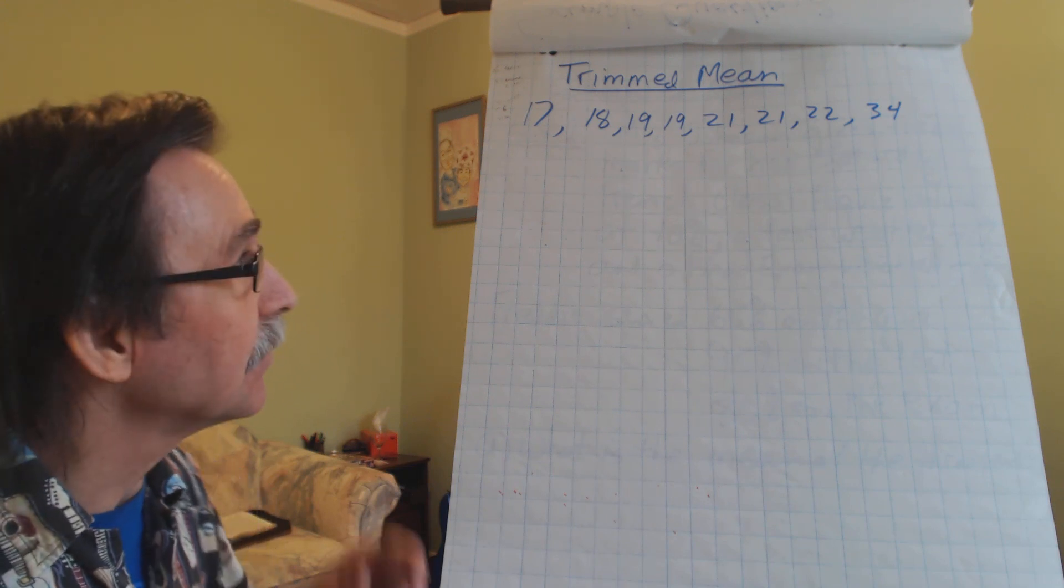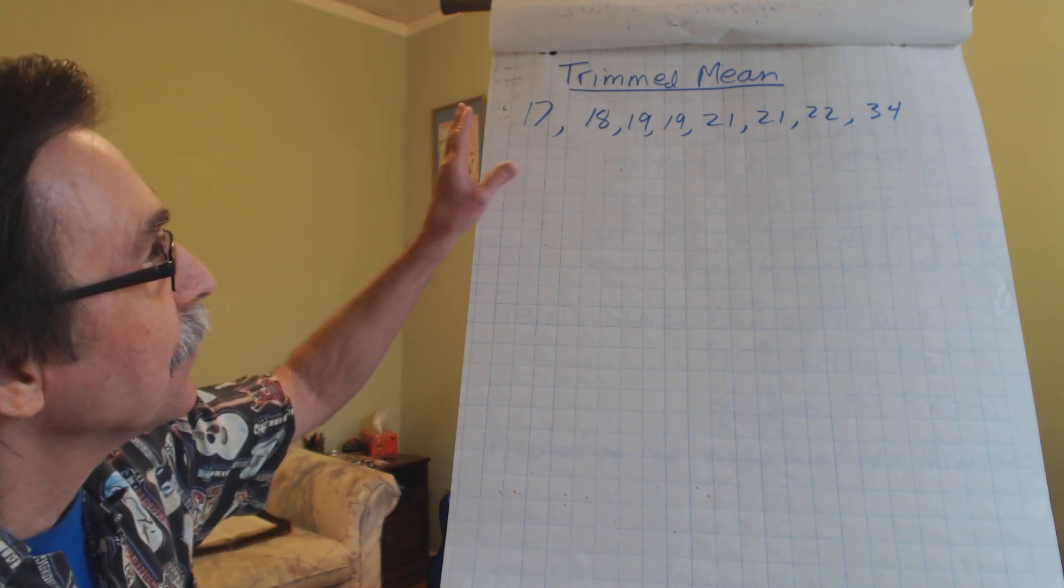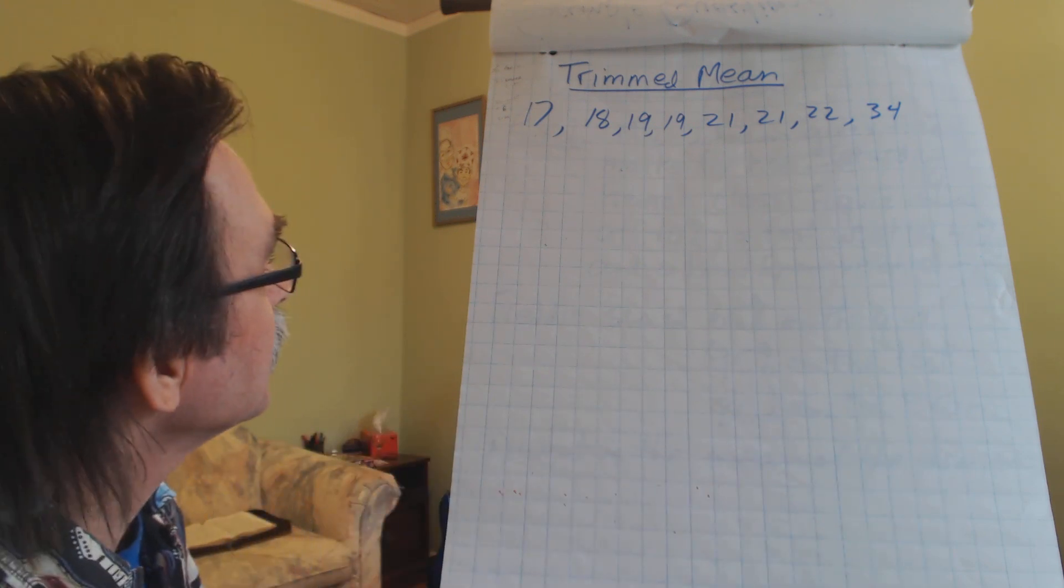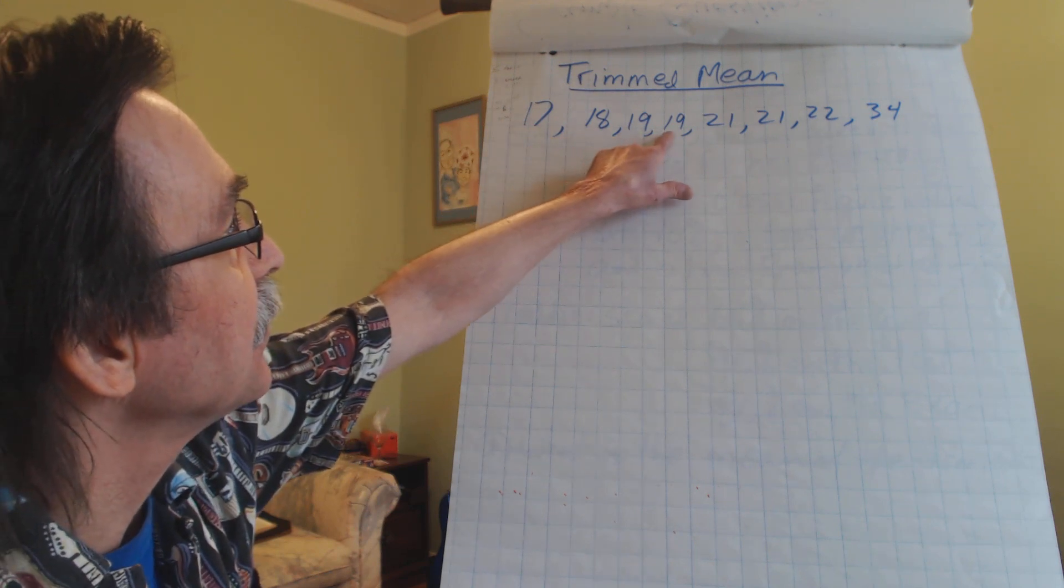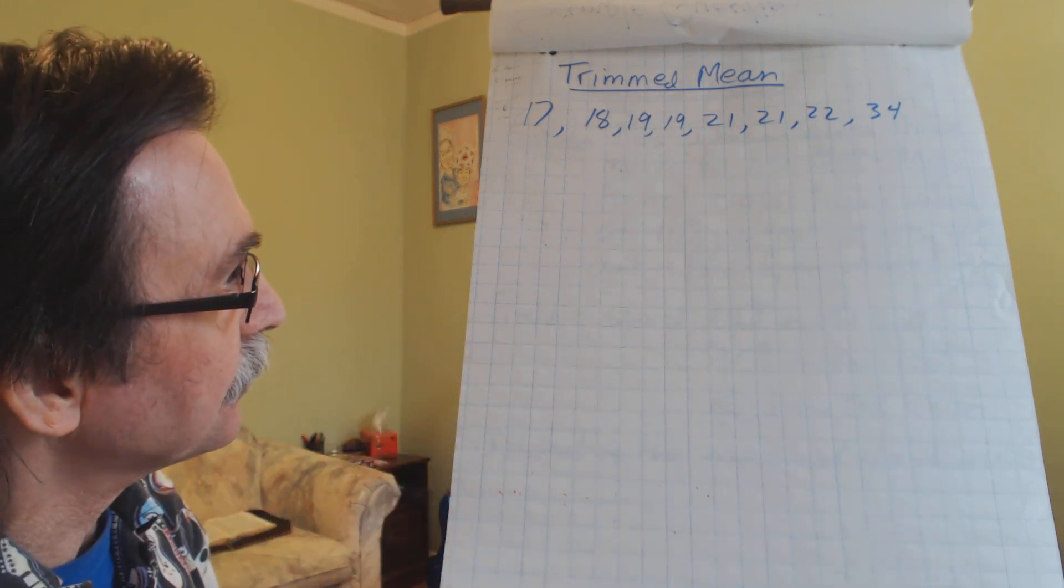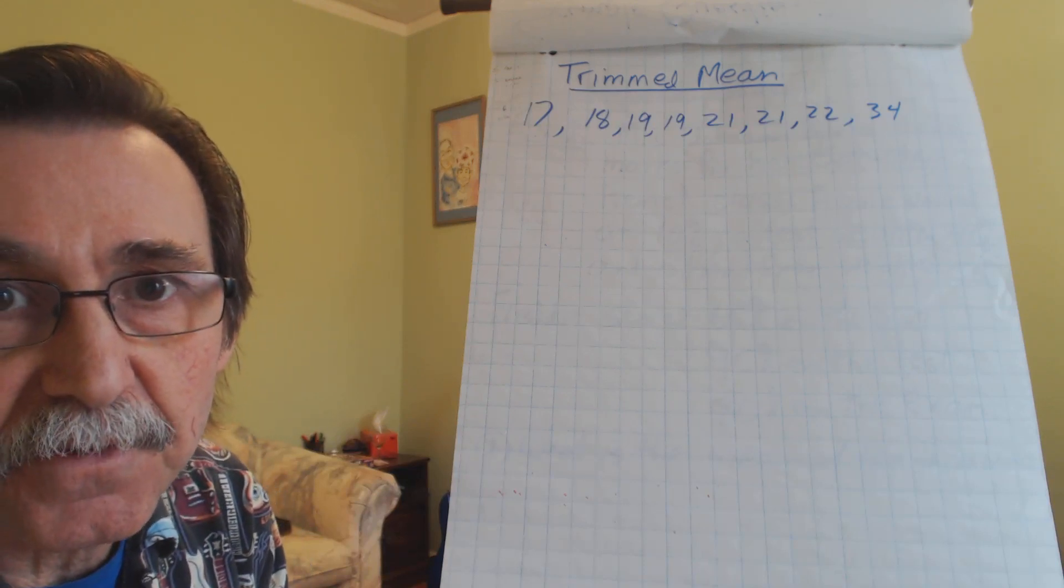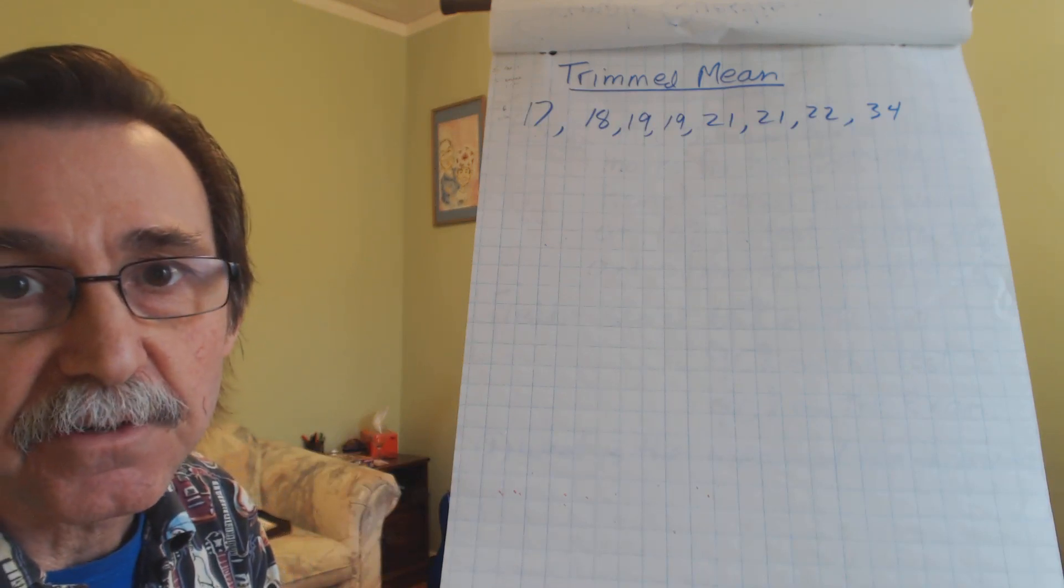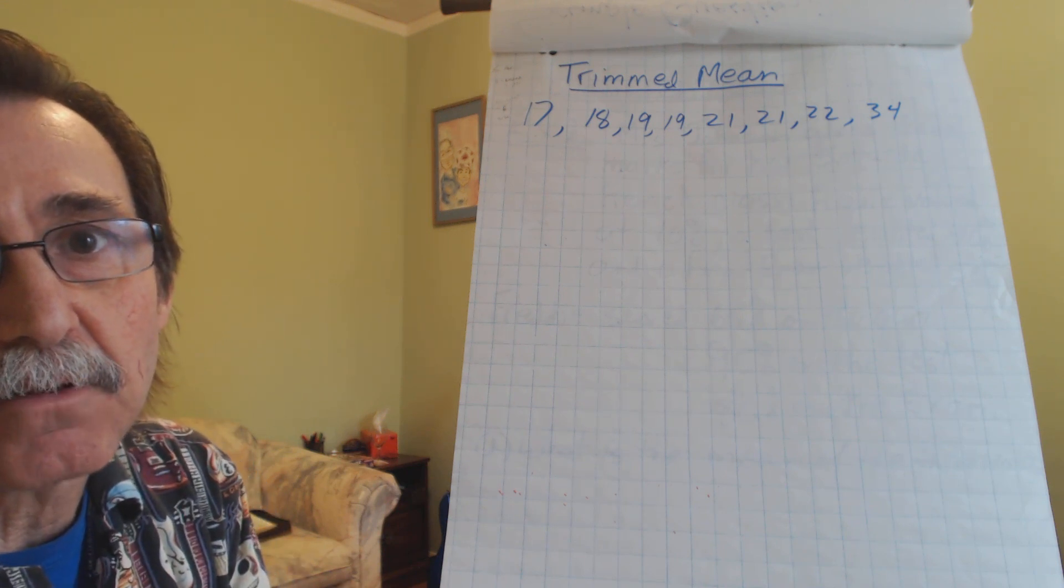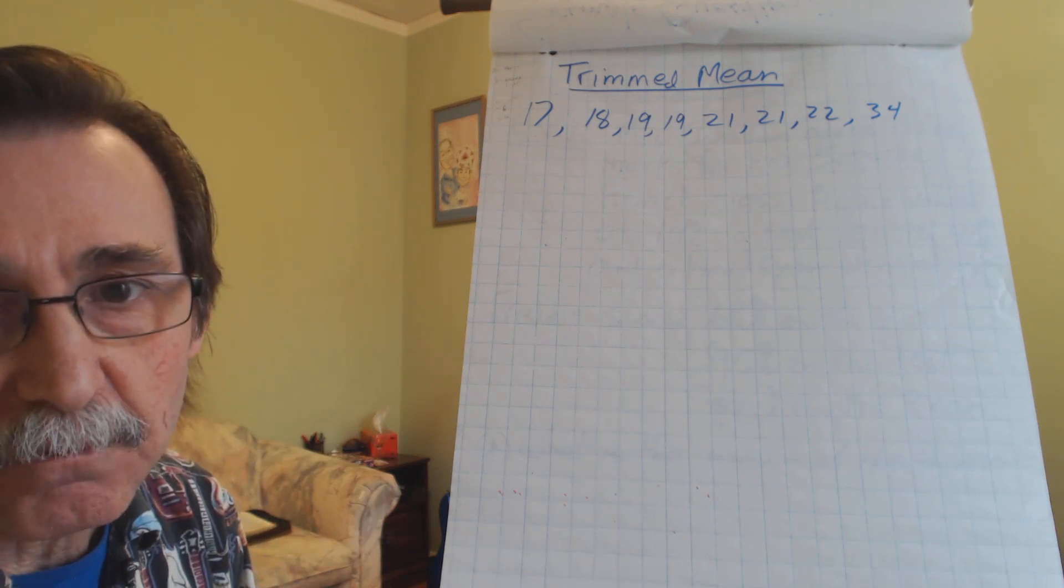And if you take a look at this set of numbers that I've got up here, I want to know the trimmed mean of this set of numbers. Well, if you look, you've got 17, 18, couple of 19s, couple of 21s, a 22, and then a 34. Well, is there a number in that set that doesn't seem to fit? Well, you guessed it, it's 34. So we're going to do something called calculating the trimmed mean. And in order to do that, we look for the outliers.